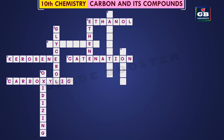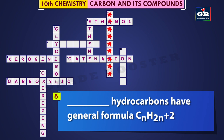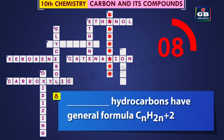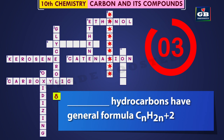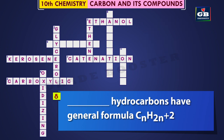8 Down: Dash hydrocarbons have general formula CnH2n+2. Do you know the answer? Saturated. Saturated hydrocarbons have general formula CnH2n+2.